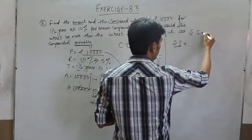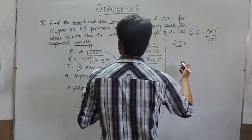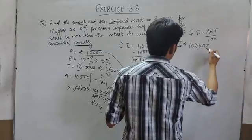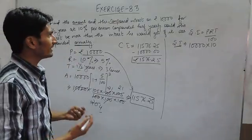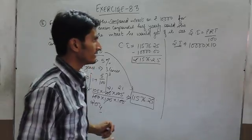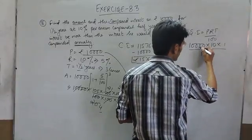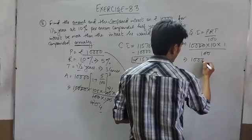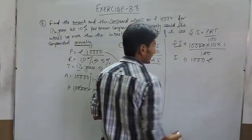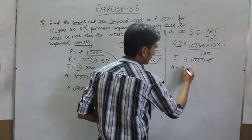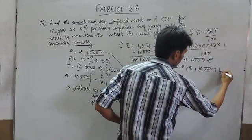The formula for simple interest is P × R × T upon 100, where P is principal, R is rate, and T is time. So in this case the principal is 10000, rate will be 10% because the interest is payable annually — every year you will be paid interest, so the interest rate will not be changed — and time is 1 year. When we calculate this, the interest will be 1000 rupees.